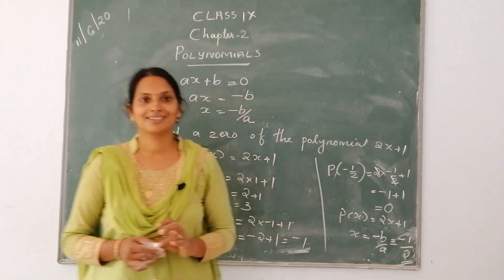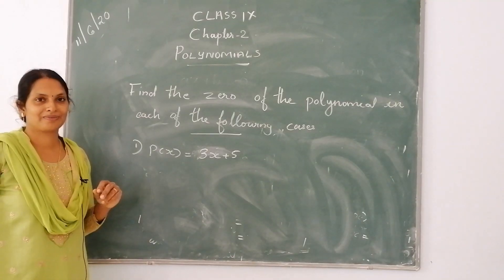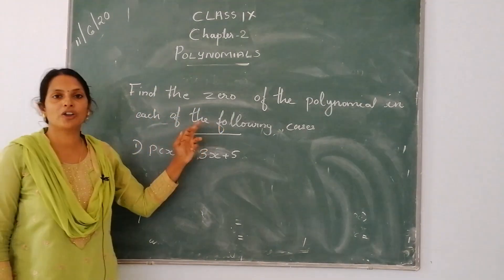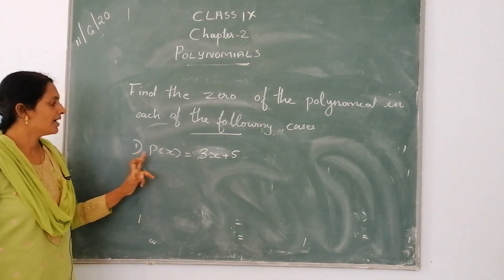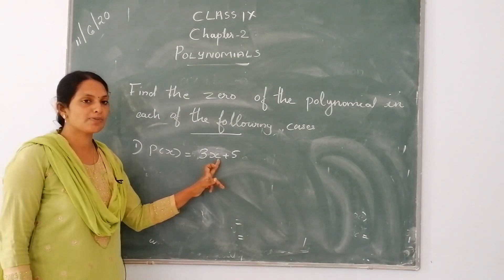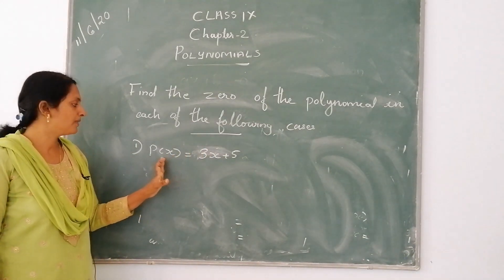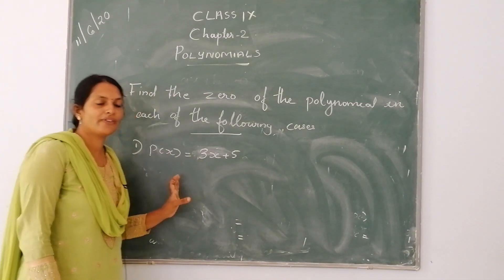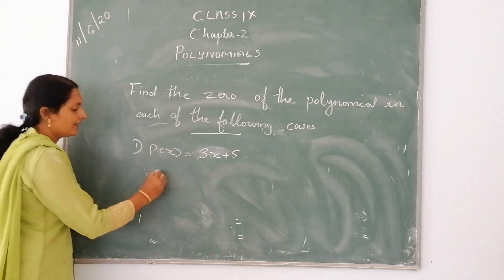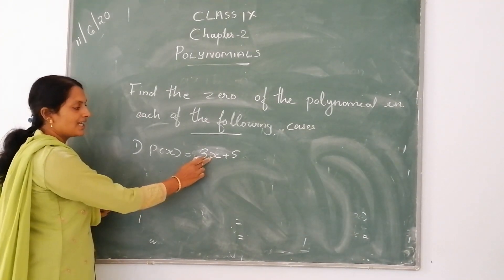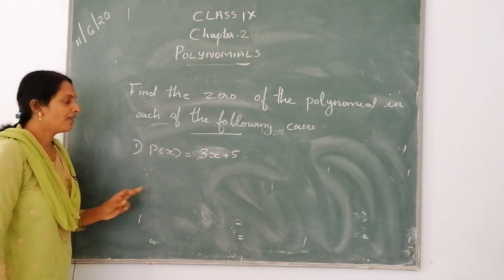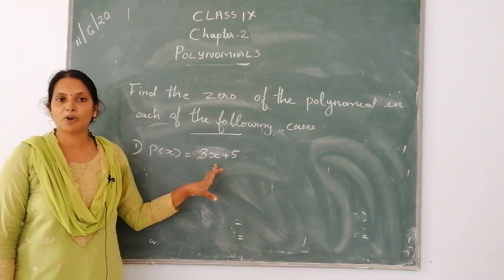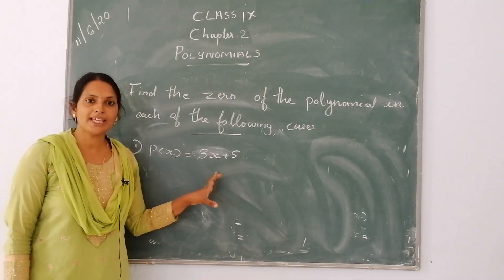Do you understand? Consider another example. Find the zero of the polynomial in each of the following cases. First one: p of x is equal to 3x plus 5. What is the zero of the polynomial? We get p of x equal to 0, then the value of x is called the zero of the polynomial. It is a linear equation, so the formula to find the zero of a linear polynomial is minus b by a.